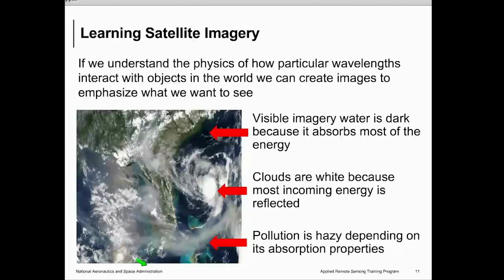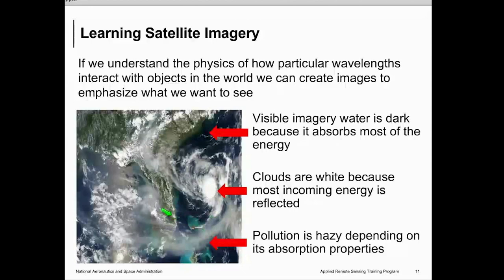If you understand the physics of how a particular wavelength interacts with objects on the earth, in the atmosphere, or in the ocean, we can create images that emphasize certain features. In a visible or true color image, water appears dark as it absorbs more energy. Clouds appear white as they reflect more incoming solar energy. The color of pollution, haze, or smoke depends on its absorbing properties. In this particular image, fires burning off the coast of Georgia and Florida in the United States are putting out a lot of smoke, which is mixing with clouds and weather patterns and transporting in the area.